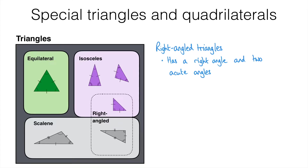Right-angled triangles can also be scalene. In this example we have a right angle, but the three sides are all of different length, which also means we have three angles that are all different. The 90 degree angle is the biggest one, and we then have two smaller acute angles which are both different because this is scalene, not isosceles.